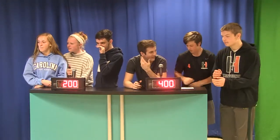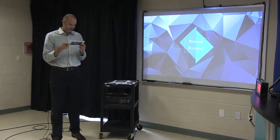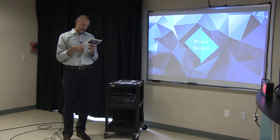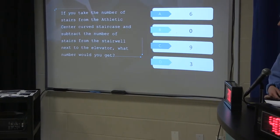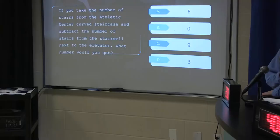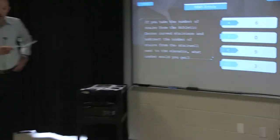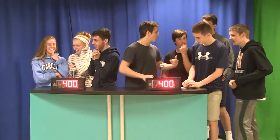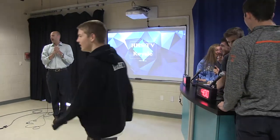Okay, now bonus round. Long question so I need you to listen. It's worth 200 points. Bonus question: If you take the number of stairs from the athletic center curved staircase and subtract the number of stairs from the stairwell next to the elevator, what number would you get? Again, the question is up on the board. Team Kinsley, what is the answer? D, three is correct! We have a tie game. Yes, we do, 200. That was a 200 pointer so we have 400 to 400 going into the final round.